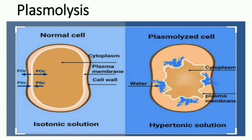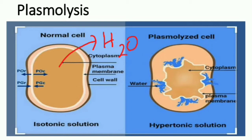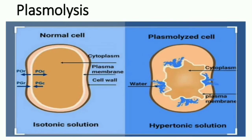Coming to plasmolysis. This is a normal structure of a plant cell. It has a cell wall, cell membrane, and cytoplasm. If water moves out from the cytoplasm, the cells start to shrink away from the cell wall. This process is known as plasmolysis, and the cell which undergoes plasmolysis is called a plasmolyzed cell.